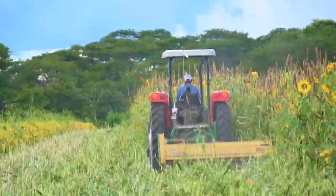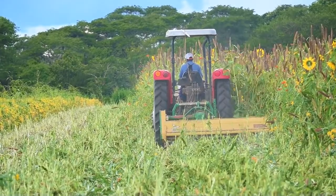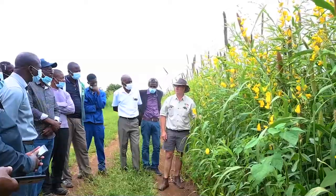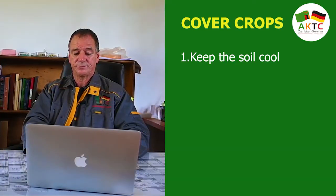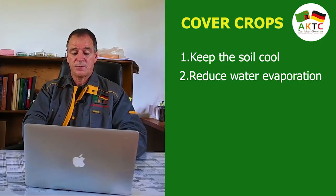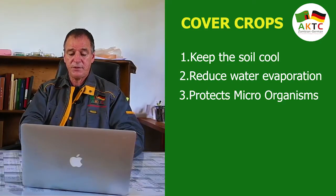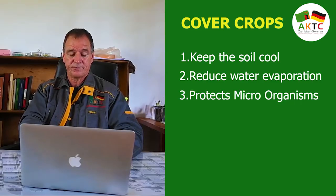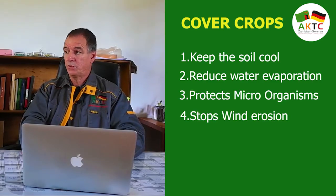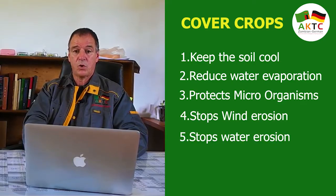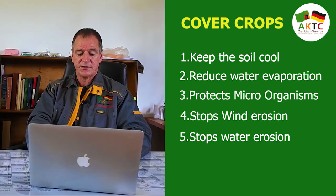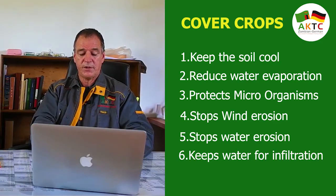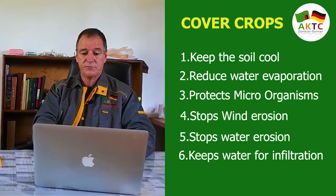I then cut and mulch the crop again before the seeds are mature. This creates a thick layer of mulch that: 1. Keeps the soil cooler under a hot sun. 2. Reduces water evaporation. 3. Protects the microorganisms. 4. Stops wind erosion. 5. Stops water erosion from big heavy rainstorms. 6. Dams the water after a rainstorm, helping the water to infiltrate.